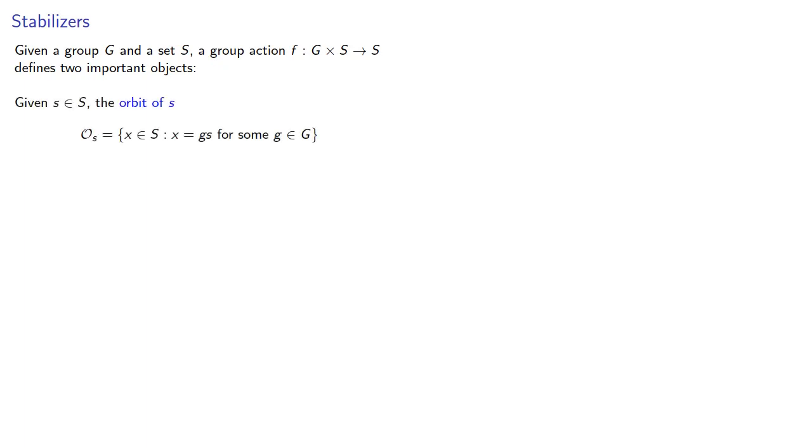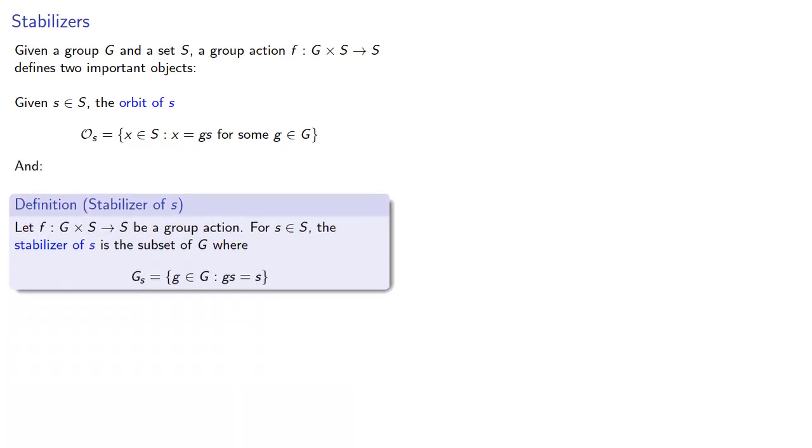Given an element of S, we can talk about the orbit of S, which we talked about previously, and also the stabilizer. Let F be our group action. For an element of S, the stabilizer is the subset of G, where G applied to S just returns S.